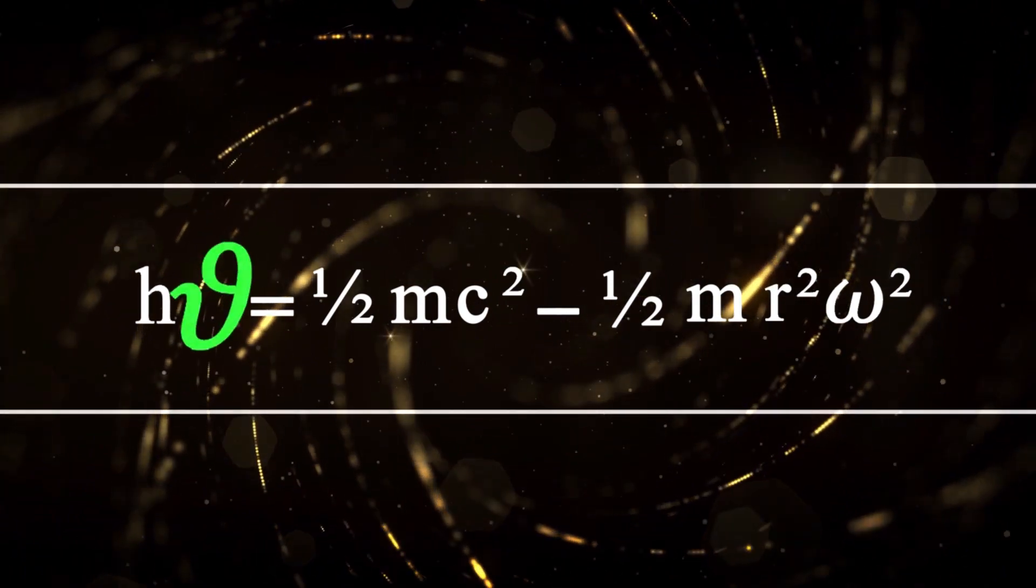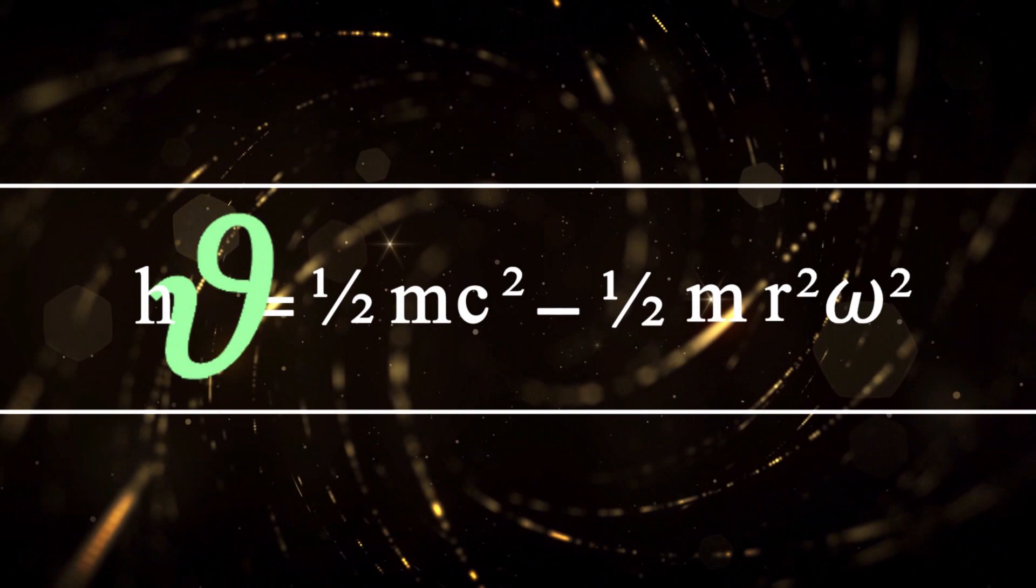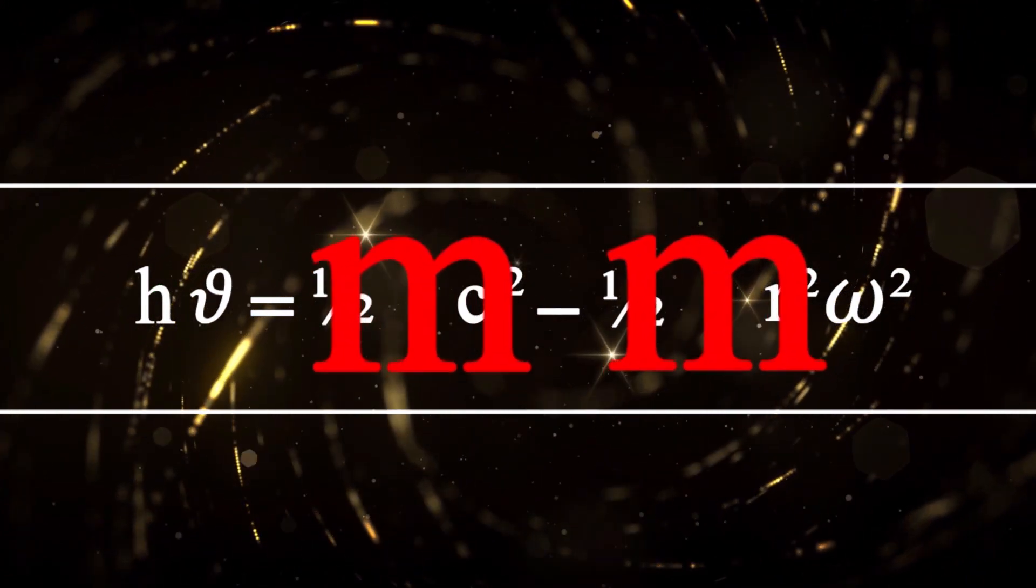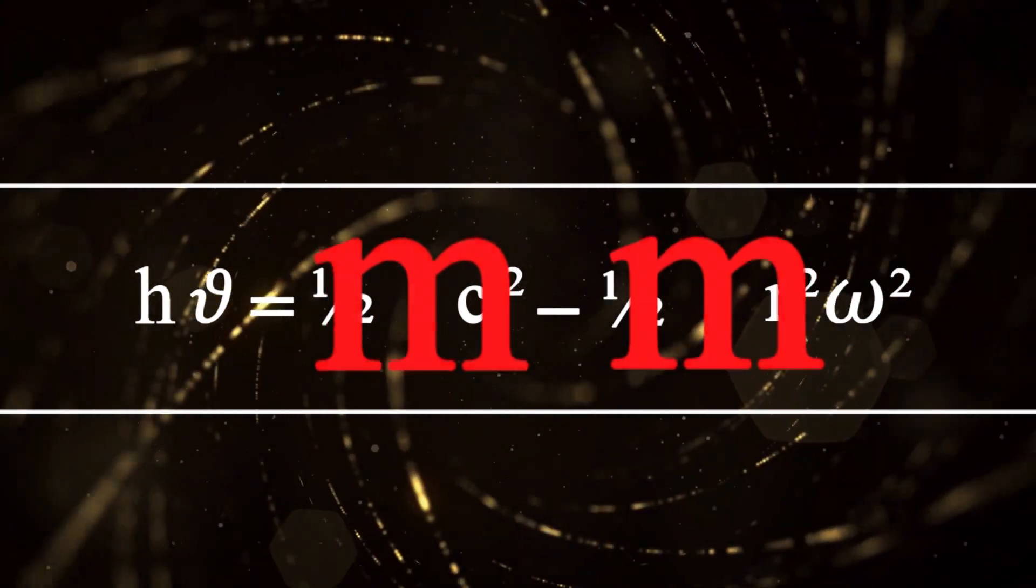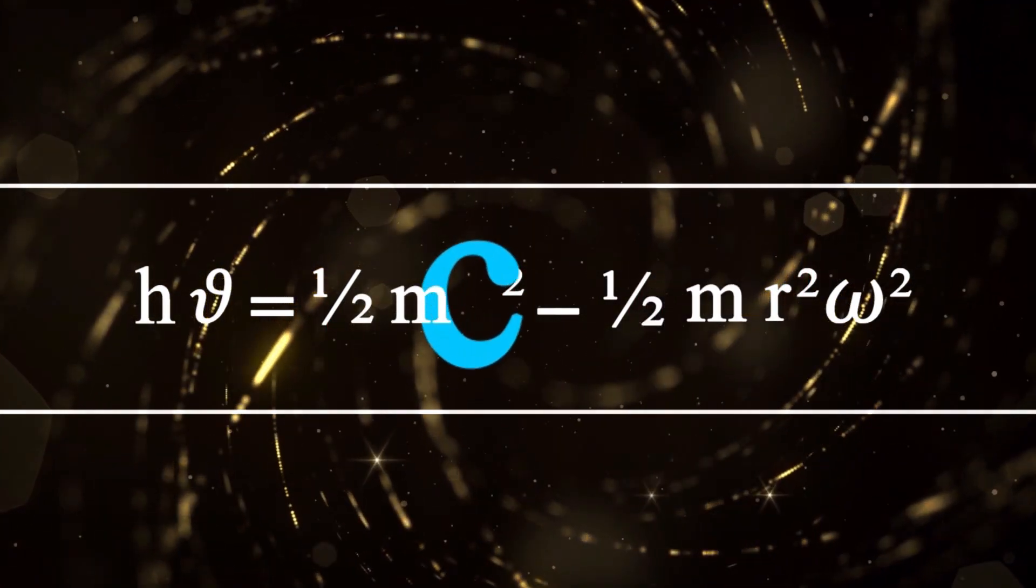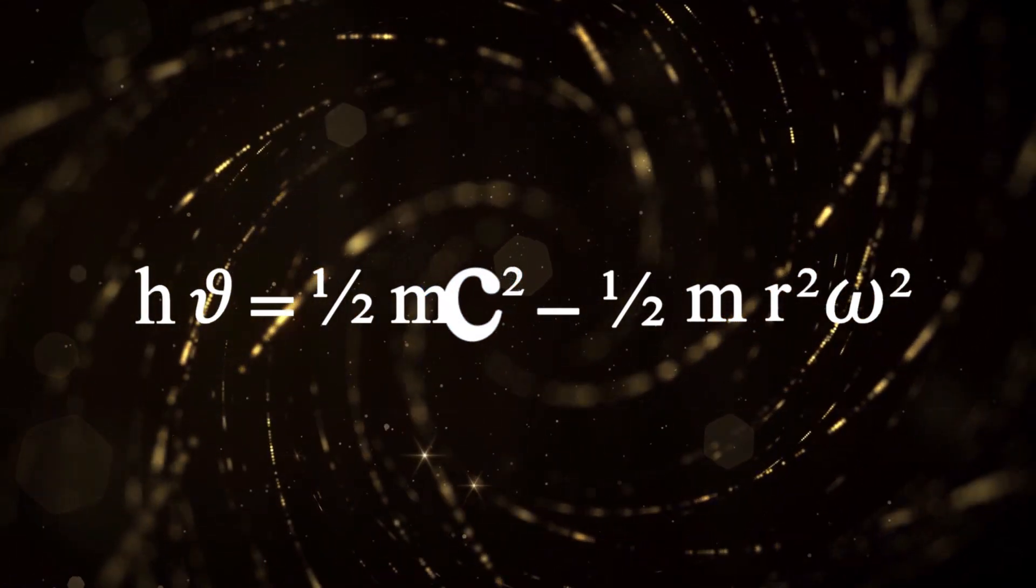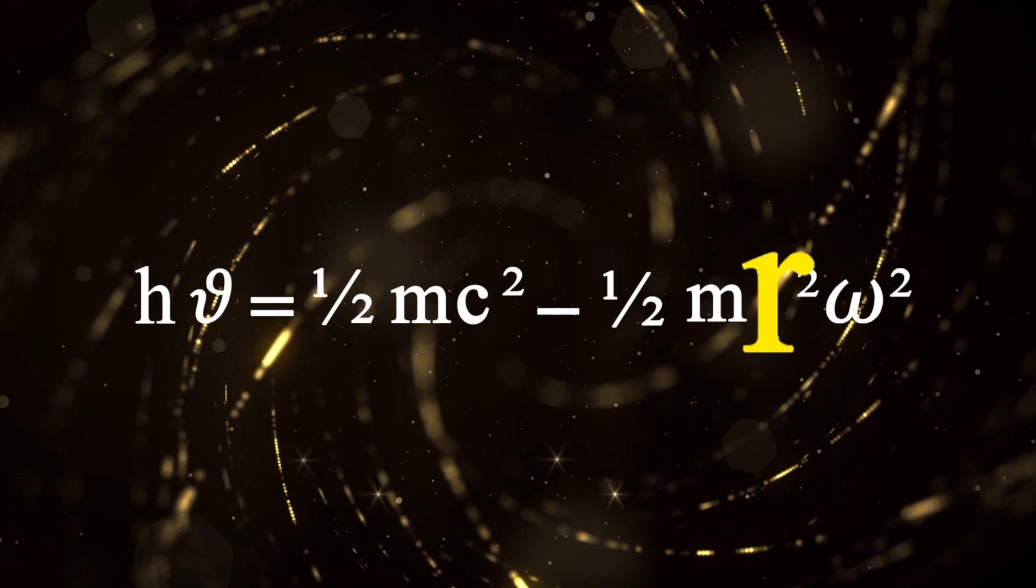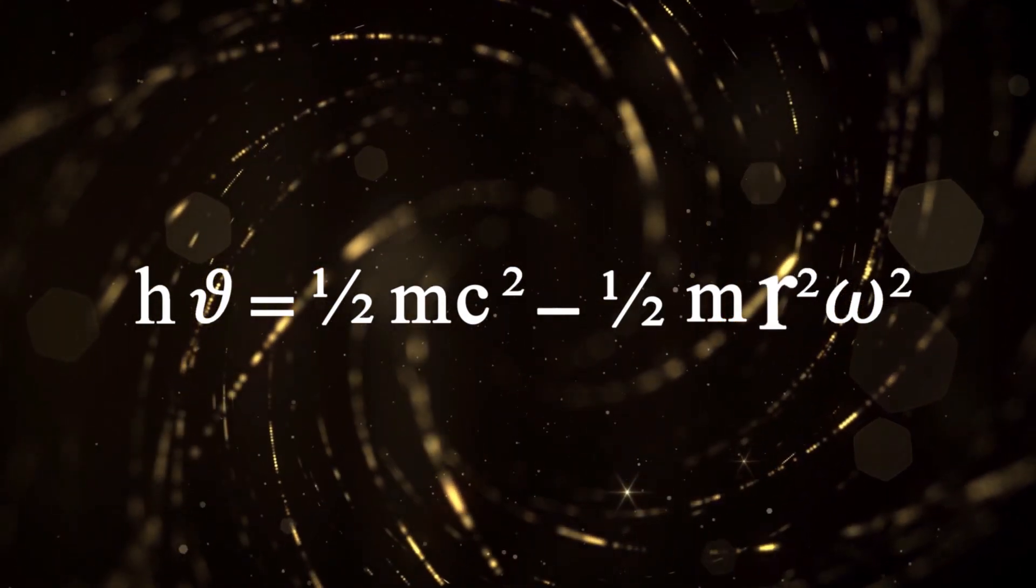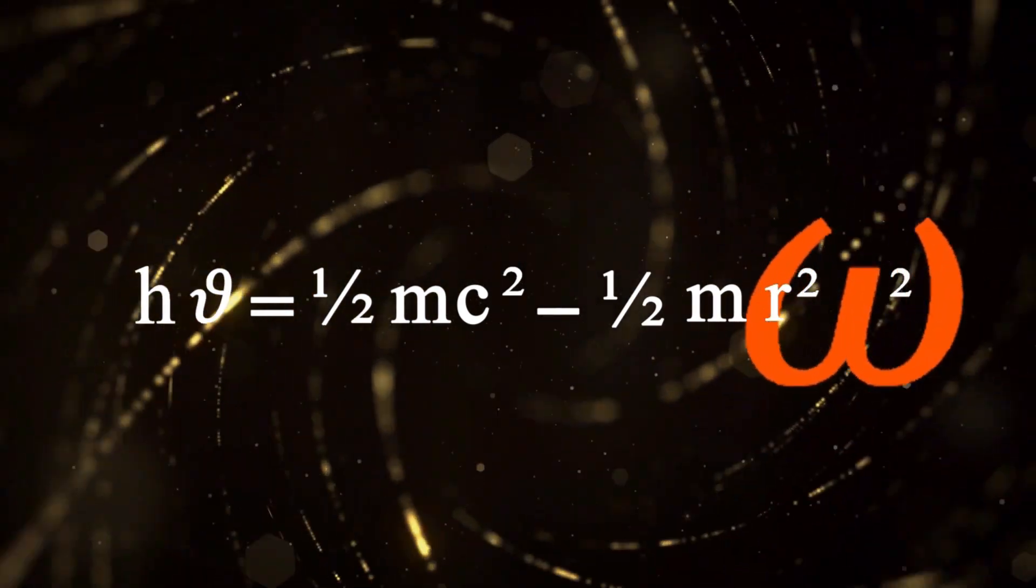Nu is frequency, where M is the photon mass, C is linear speed of photon, R is gyro-radius, and omega is angular velocity.